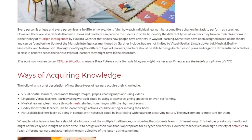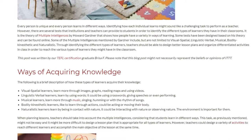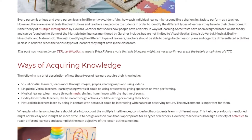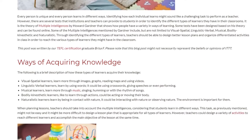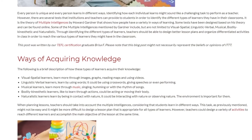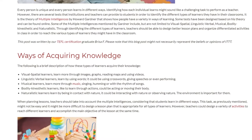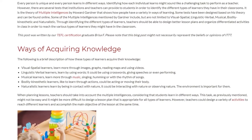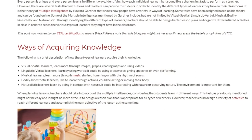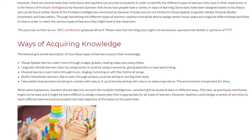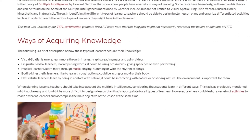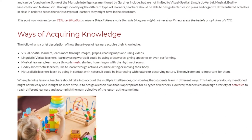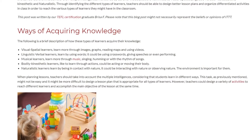The following is a brief description of how these types of learners acquire their knowledge. Visual-spatial learners learn more through images, graphs, reading maps, and using videos. Linguistic-verbal learners learn by using words — it could be using crosswords, giving speeches, or even performing. Musical learners learn more through music, singing, humming, or with the rhythm of songs.